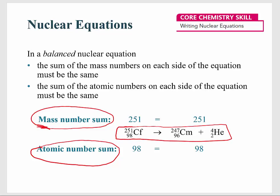The idea behind balancing a nuclear equation is straightforward: the total mass number on both sides of the equation should be equal, and the total atomic numbers on both sides must also be equal. For example, on the left side we have 98 as the atomic number; on the right side we have 96 plus 2, which equals 98. For the mass number, we have 251 on the left, and 247 plus 4 equals 251 on the right. So this is a balanced nuclear equation.